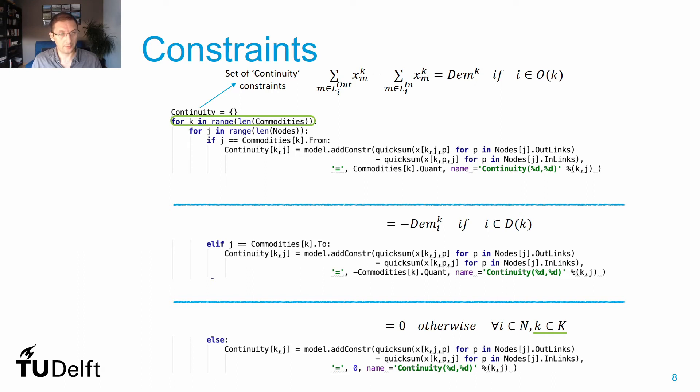They are represented in a 'for all' at the end of my formulation and a for loop in the beginning of my script. And also a for loop j that represents the 'for all' elements in the set of nodes, so I'm going to have a constraint for each combination of commodity and nodes in my network. And then I split in three parts.